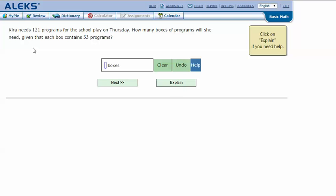Kira needs 121 programs for the school play on Thursday. How many boxes of programs will she need given that each box contains 33 programs? Let's click explain.